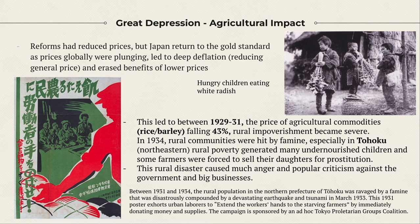When the stock market collapsed in 1929, this produced huge impacts intensified by Japan's prior economic policies. Hamaguchi's reforms had reduced prices, but when Japan returned to the gold standard, prices plunged, leading to very deep deflation — the opposite of inflation, a massive reduction in the general price level that erases the benefits of lower prices. Wages also get cut tremendously. Agricultural commodity prices such as rice and barley fell by 43%, cutting farmers' revenue by about 50%.